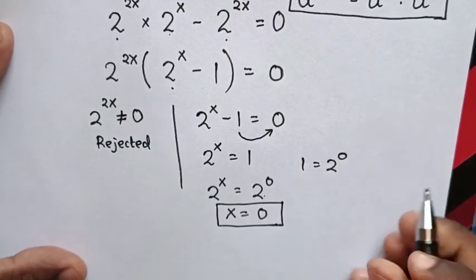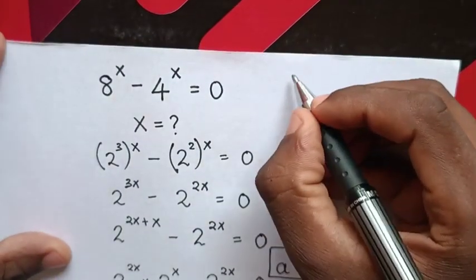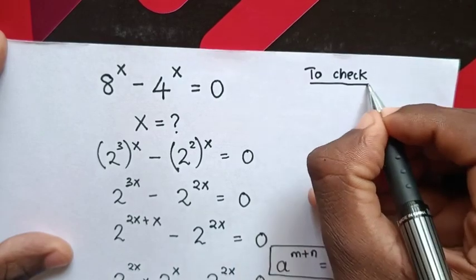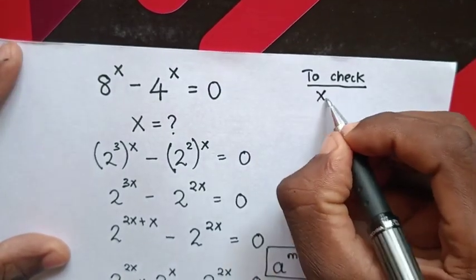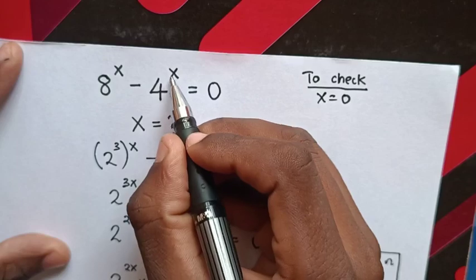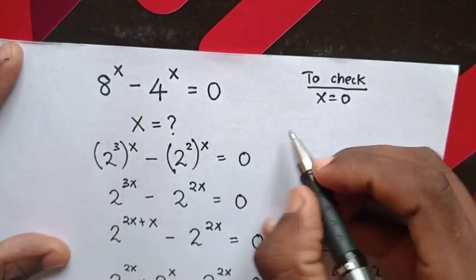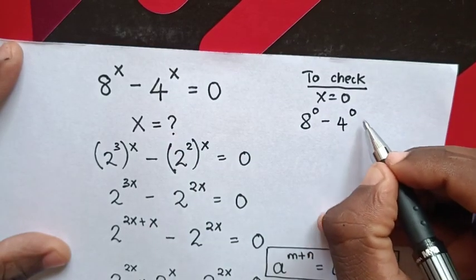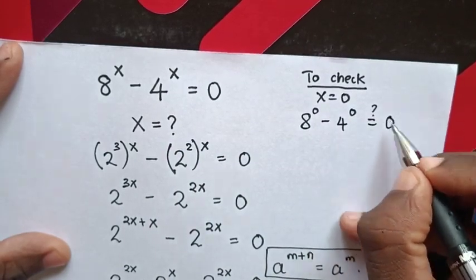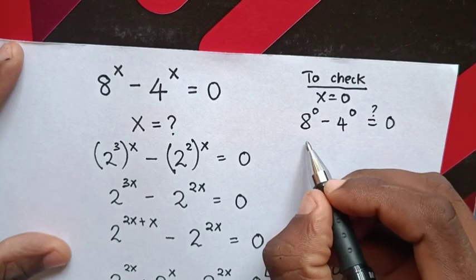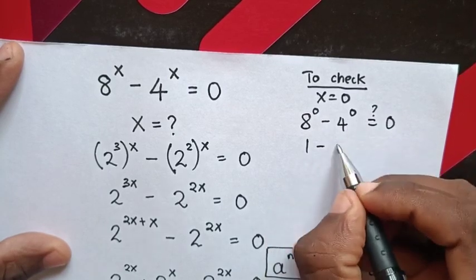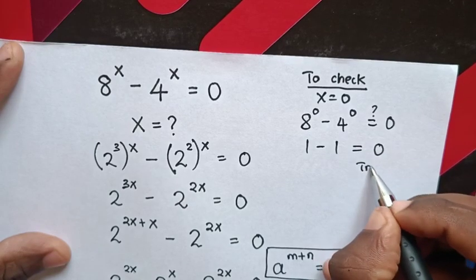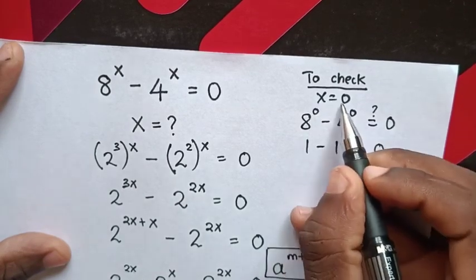Now to check if our answer is correct. From x = 0, we substitute 0 as the power of x, so 8^0 - 4^0. 8^0 is 1 minus 4^0 is 1, which equals 0. So it's true for x = 0.